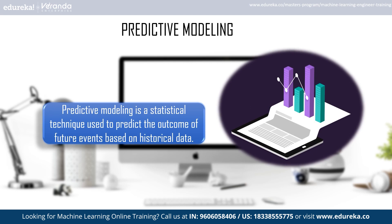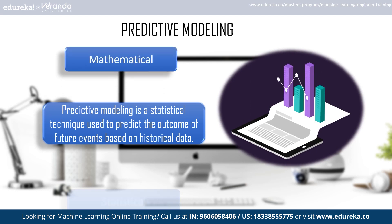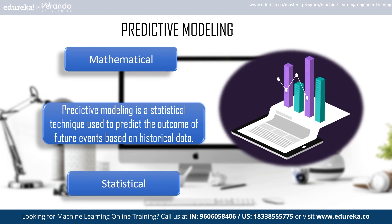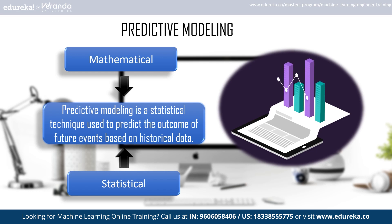The best example of predictive modeling is a stock market prediction app, where it uses graphs, straight-line graphs, and charts to show predictions based on historical data using statistical and mathematical functions. This is how a predictive model works.